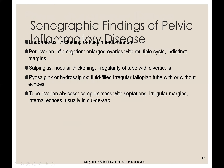This corresponds to box 45-2 in your book and describes the different findings of inflammatory disease. Endometritis (stage one) presents with thickening or fluid in the endometrium. Periovarian inflammation shows large ovaries with multiple cysts and distinct margins. Salpinitis shows nodular thickening and irregularity of the tube with diverticula. Pyosalpinx or hydrosalpinx is a fluid-filled irregular fallopian tube with or without echoes. A tubo-ovarian abscess is a complex mass with septations, irregular margins, and internal echoes, usually in the cul-de-sac.